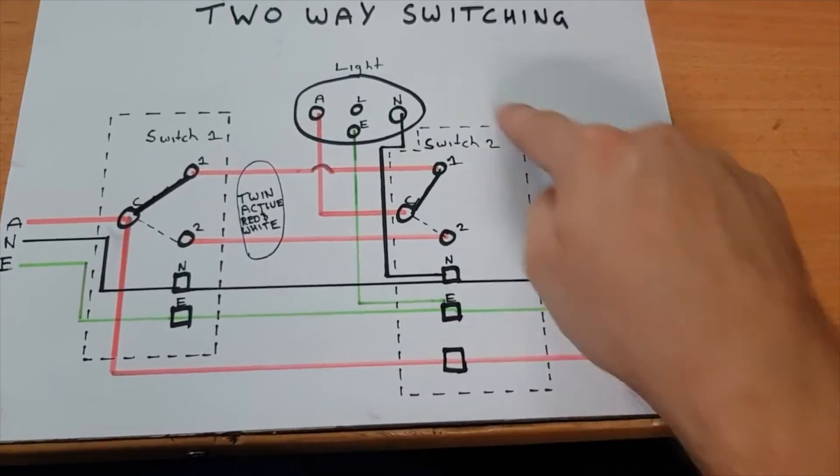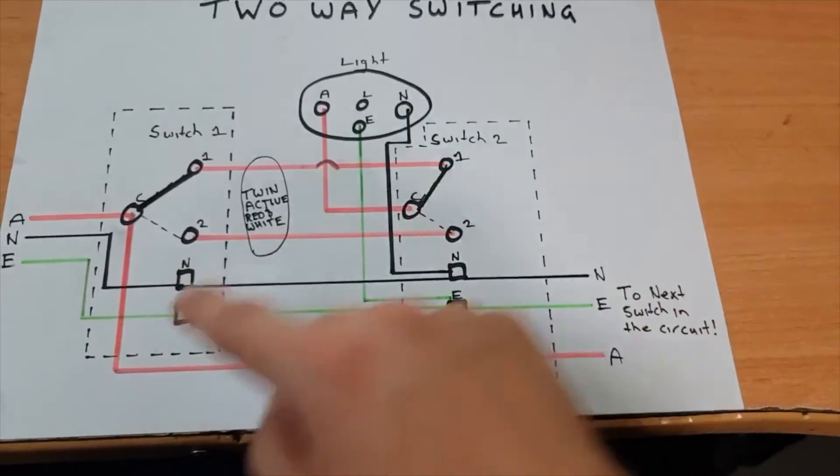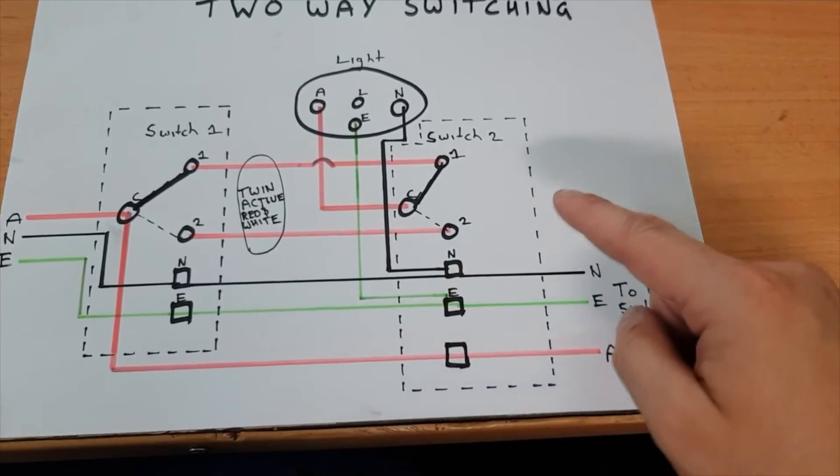You wouldn't take a neutral from here to here or here to here. I mean you can, but it just gets confusing for the next person that tries to touch your wiring.